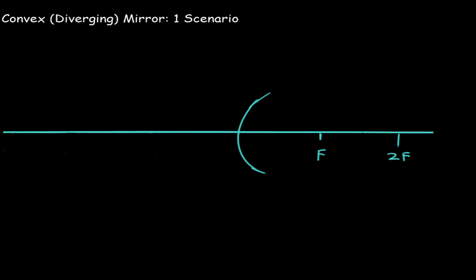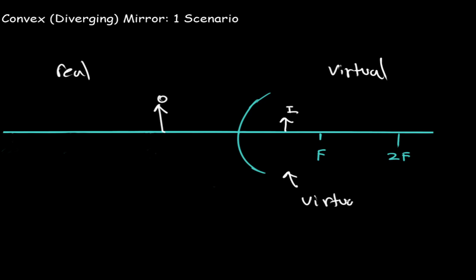A convex or diverging mirror has only one scenario. The left side will be our real side and the right side will be our virtual side. If your object is placed on the real side of the convex diverging mirror, all you have to remember is that your image will appear on the virtual side — it will be upright and reduced. The further your object is from the mirror, the smaller your image will be.